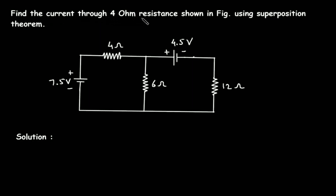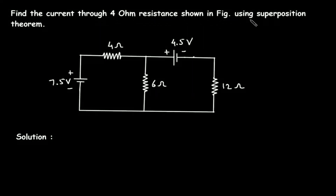Find the current through the 4 Ohm resistance shown in the figure using the superposition theorem.